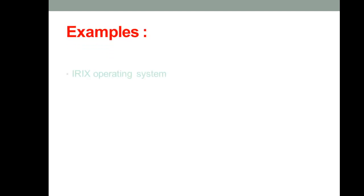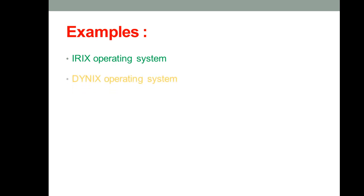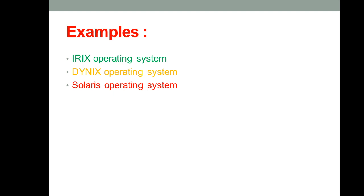Some examples of distributed operating systems include: ERICS operating system, DYNIX operating system, Solaris operating system, OSF/1 operating system (which is UNIX compatible), and Locus. These are some examples of distributed operating systems. Make sure to learn these clearly and note them down in your notebook. Hope the concept of distributed operating system is clear to everyone. Thank you.